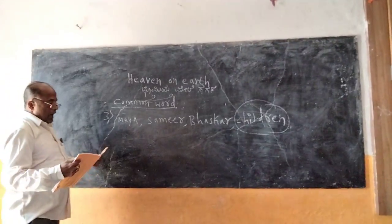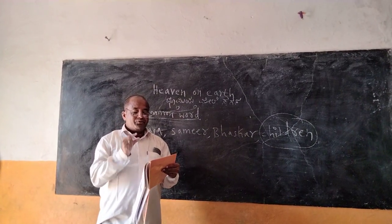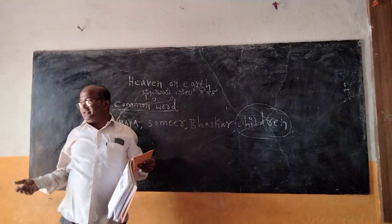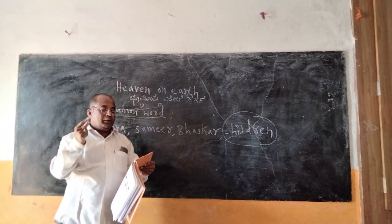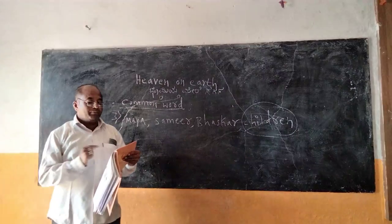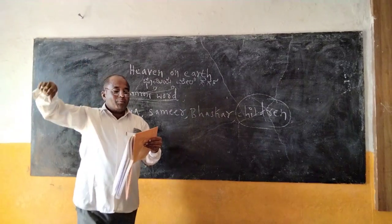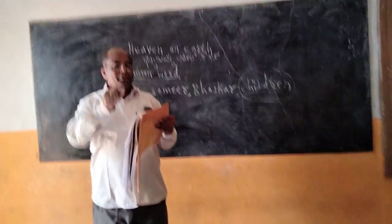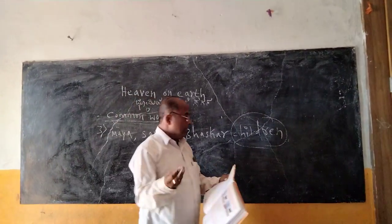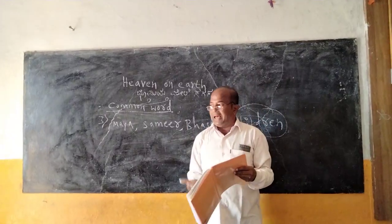Then: chair, bench, table — these come under 'furniture.' Do you understand? Chair, bench, table all come under furniture. We have to mark that furniture word. Fifth one: cow, elephant, dog — 'animal' is the common word. Choosing the animal: cow, elephant, dog — animal is the common word.